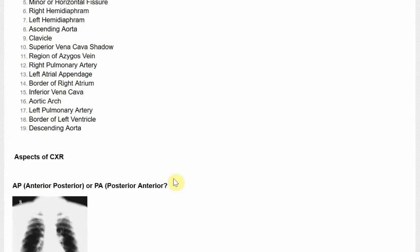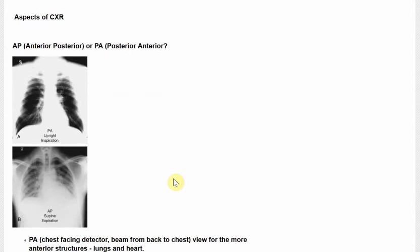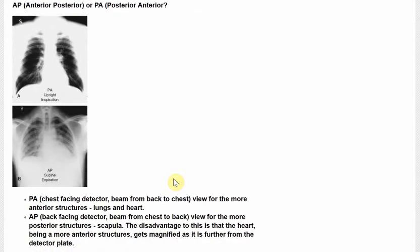In terms of interpreting the chest radiograph, you need to appreciate the technicalities of it. First of all, is it an AP or a PA film? So anterior-posterior or PA film. What happens with a PA film — chest radiograph works like this: you've got your chest, your detector, and the beam. In a PA film, the chest faces the detector; the chest is pressing on the detector. The beam is going from the back of the chest to the front of the chest, so things are more accurate in size.